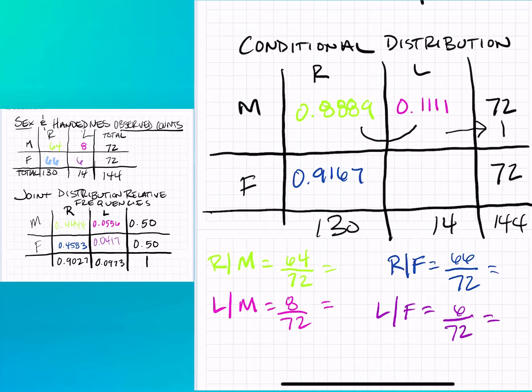And then we have left-handed given that they're female, and that was an observed count of six, and then our denominator would be 72. So these conditional distributions help us to know if the explanatory and response variables are related.